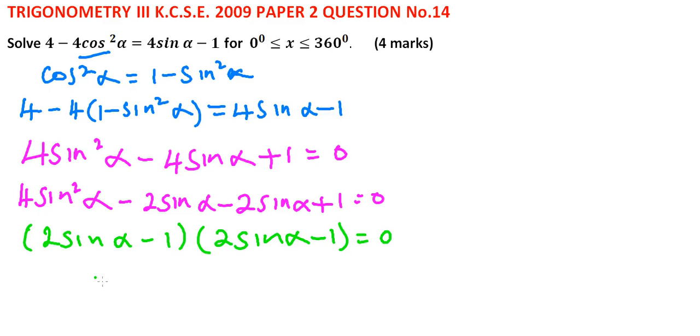From there, since these are the same, we can rewrite it as 2 sin alpha minus 1 into bracket squared is equal to 0.